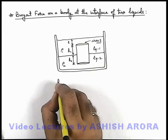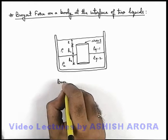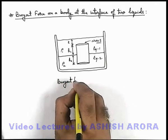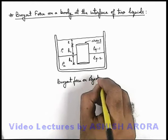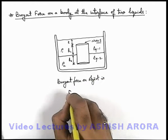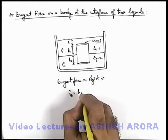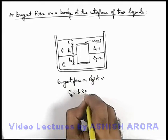So we can simply write down here buoyant force on object. This can be directly written as h₁S ρ₁g, as it is the weight of liquid 1 which is displaced by the object.